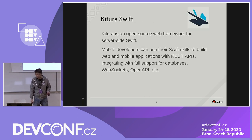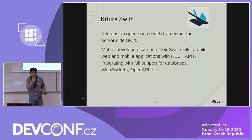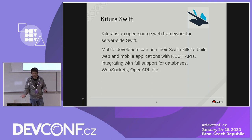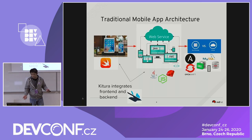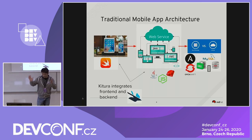We can also leverage the nature of the Swift language to make the backend service more lightweight and faster. This is how IBM Kitura comes into place. Kitura is an open source framework developed by IBM back in 2015. Mobile developers could use their Swift skills to build backend web services supporting REST API, WebSocket, OpenAPI, and databases. Kitura bridges the gap between the front end and backend.